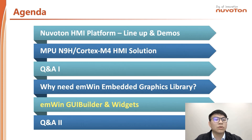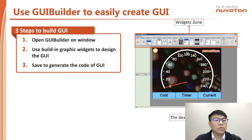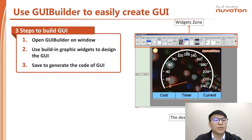We are going to introduce EN-Wing GUI Builder and widgets. How to use GUI Builder to easily create a GUI? Simply, the process of GUI design only includes three easy steps. The first step: open GUI Builder on Windows. The second step: use built-in graphics widgets to design your own widget. The third step: save and generate the code of the GUI.